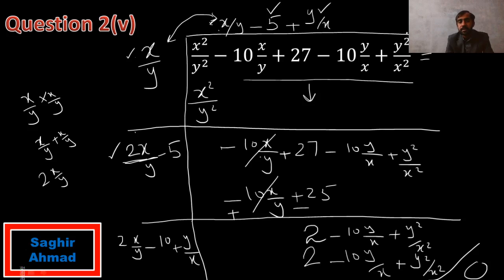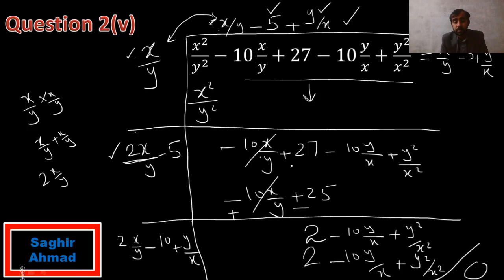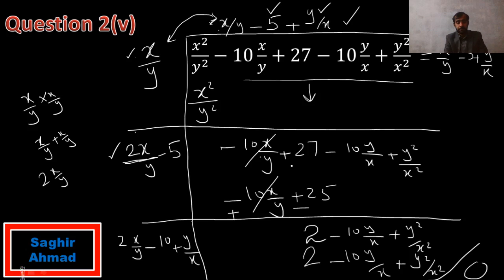When we take the square root of this expression we get the answer: x over y minus 5 plus y over x. These are the two methods used in exercise 6.3. We solved all short syllabus questions. You have to do the remaining questions as homework. If you have any problem you can ask me in the comments. Thank you for watching. Allah Hafiz.